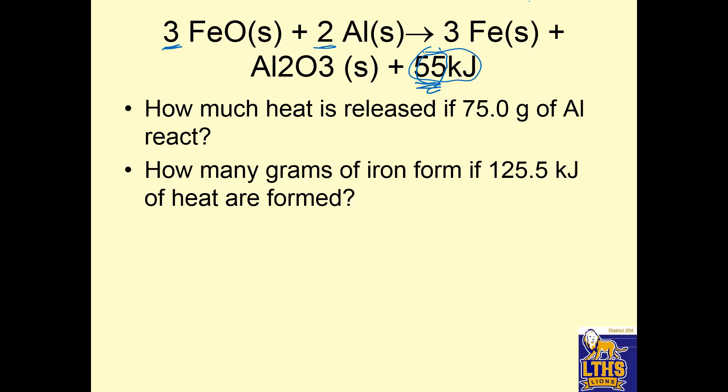So how much heat is released if 75 grams of aluminum react? This is pretty much the same as all the other ones we did. So 75 grams of aluminum, put grams of aluminum on the bottom, always go through moles, and 1 mole of aluminum equals, go to the periodic table, 26.98 grams.